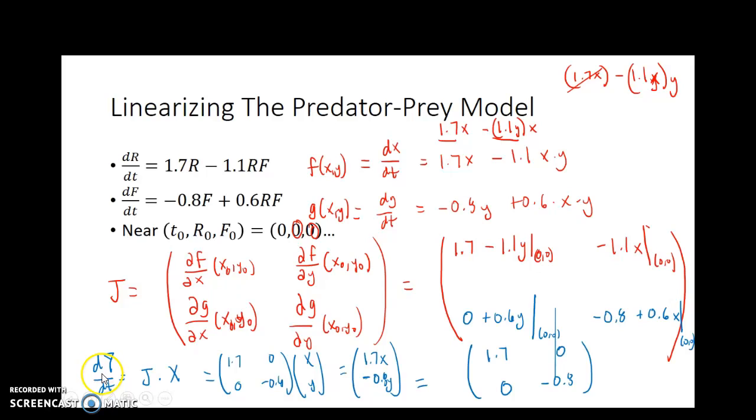The dy dt vector contains the derivative of x with respect to t and the derivative of y with respect to t, which are these two functions respectively. So our final model in this case ends up being that dx dt is linearized to be 1.7x, and dy dt is linearized to be negative 0.8y. And so that gives us our system.